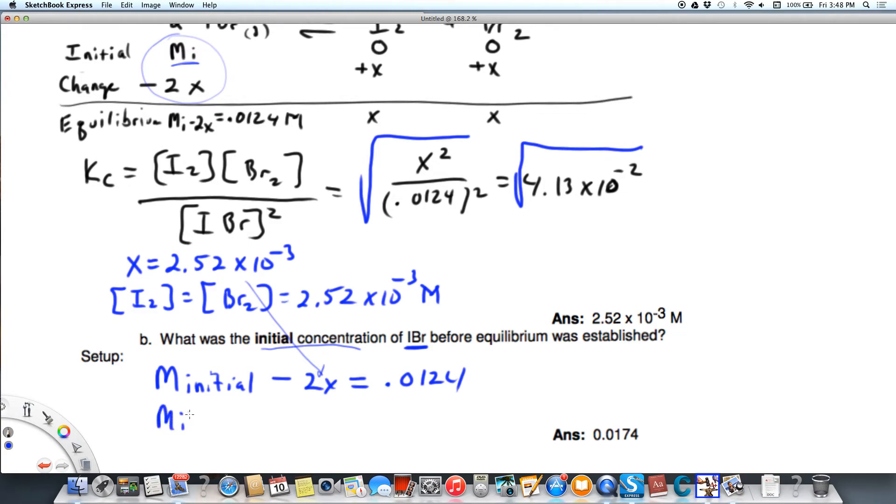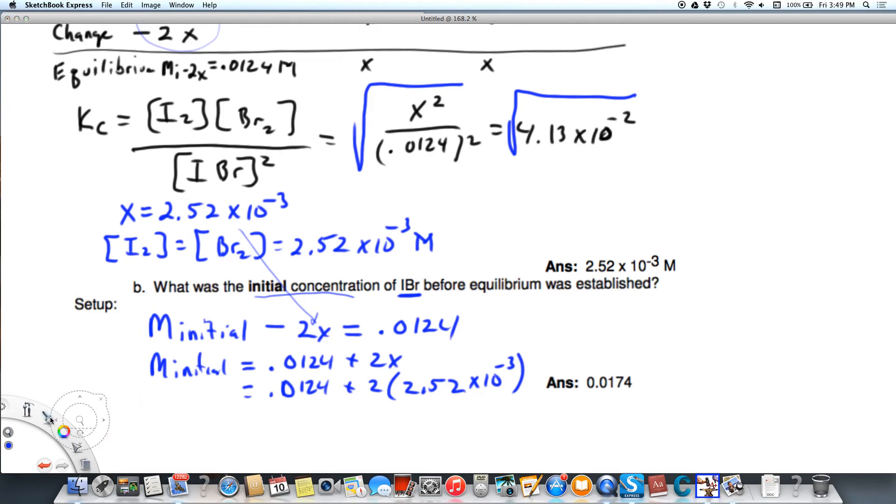So the initial molarity is going to equal 0.0124 plus 2x. And we know that 2x is 2.52 times 10 to the minus 3rd molar. So when we do the math, 0.0124, that was given as our equilibrium. We know that the IBr went down from its initial. So to go back to the initial, we're going to add 2x. And so that comes out to 0.0174 molar. And that is the initial molarity of IBr.